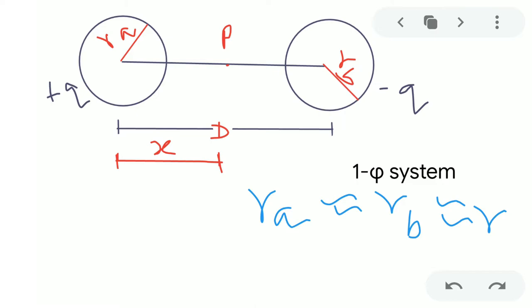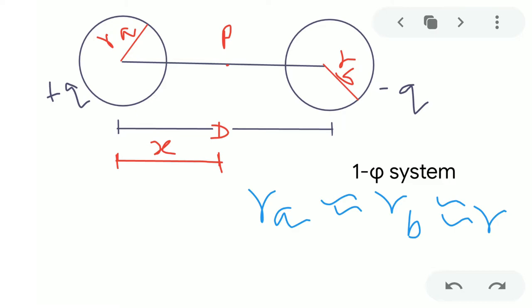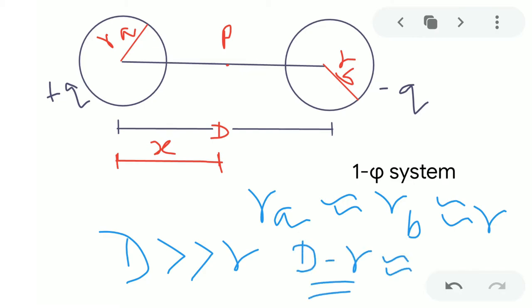The distance from the return path to point P is d − x, because if the total center-to-center distance is d and the distance from the first conductor to P is x, the remaining distance must be d − x. We also consider that d is much much greater than r, meaning the radius is very small compared to the spacing. Because of this, whenever d − r appears, we approximate it as d.